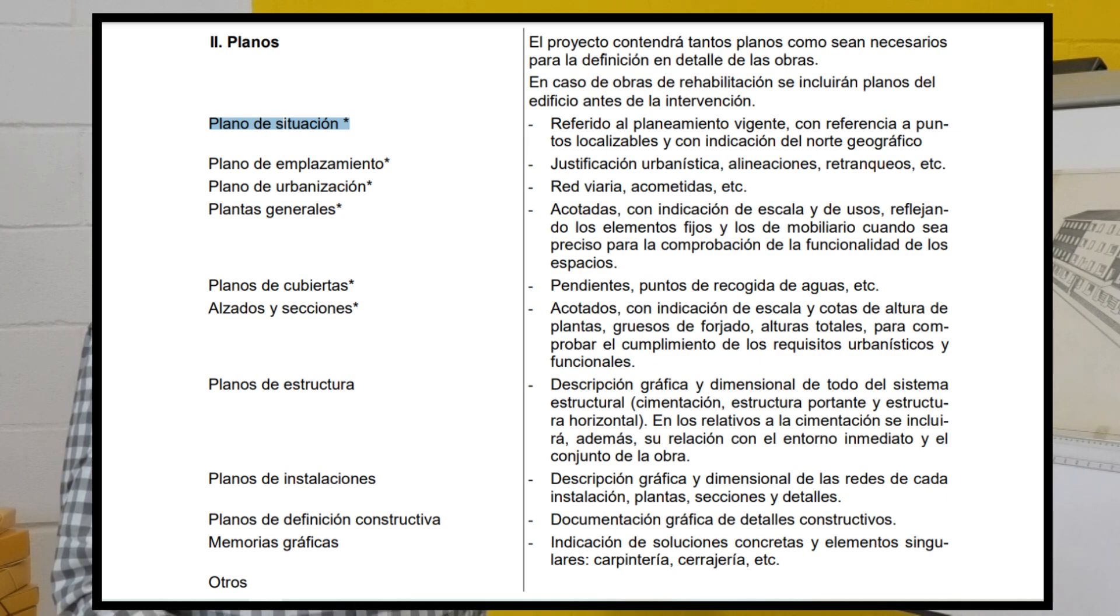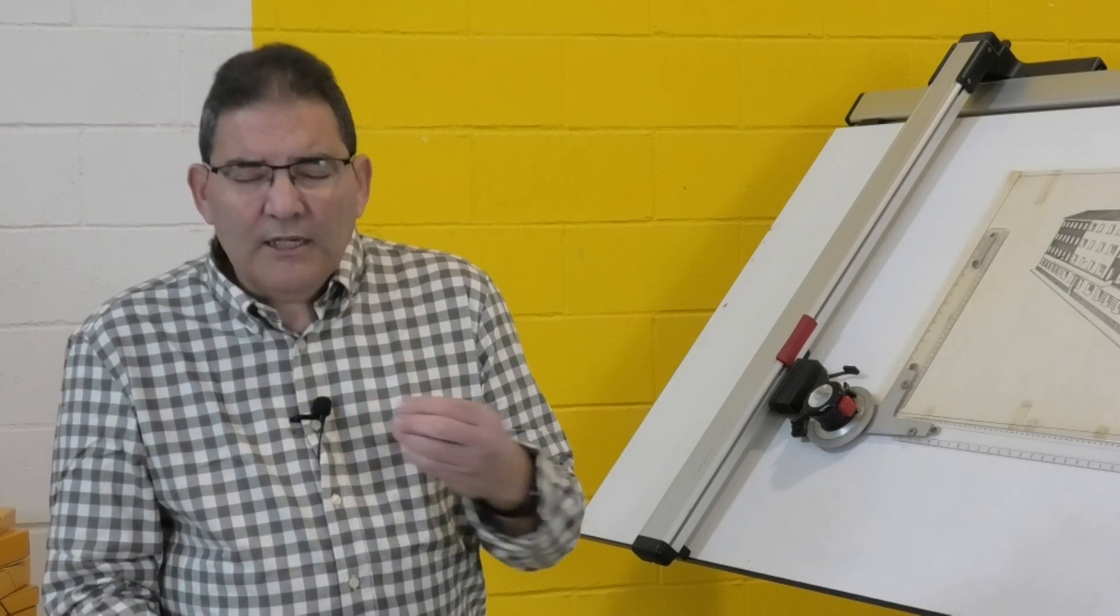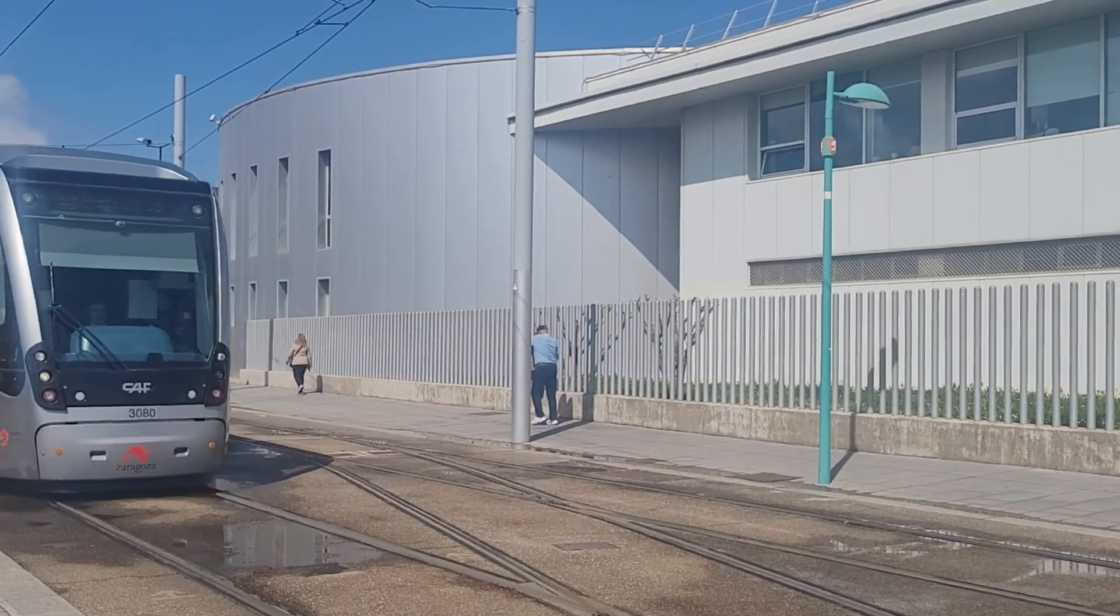Cuando nos den un permiso de obras van a analizar que esto no sean zonas inundables. Van a analizar que se le puedan dar los servicios. Si yo pertenezco a un ayuntamiento, el ayuntamiento me va a garantizar una cuota de recogida de basuras o que una ambulancia pueda llegar hasta mi casa. Yo no puedo construir donde me dé la gana. Tengo que decir dónde voy a construir.